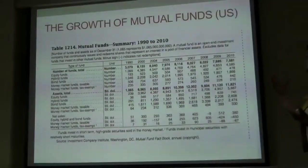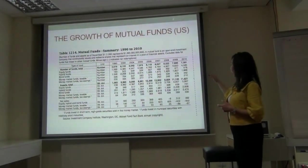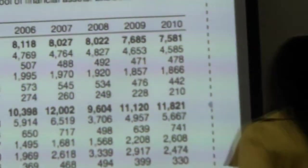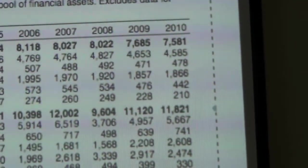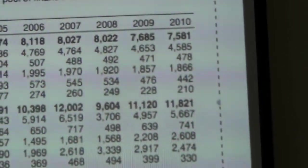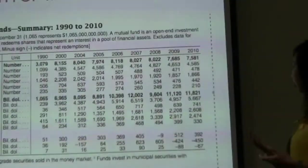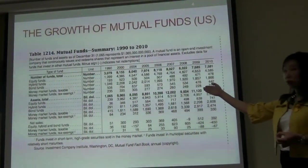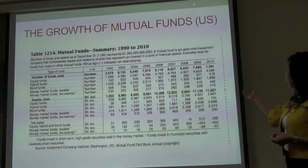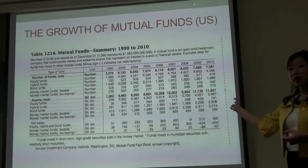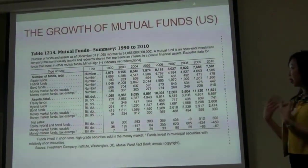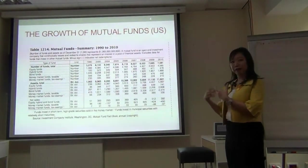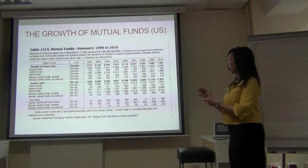This chart from the mutual fund fact book — US data — shows growth from 1990 to 2010: around 7,000 funds in the market, more than the number of shares listed in the stock market. Assets under management grew from $1 trillion in 1990 to $11 trillion by 2010. That's the first place most people invest when they think about investing.